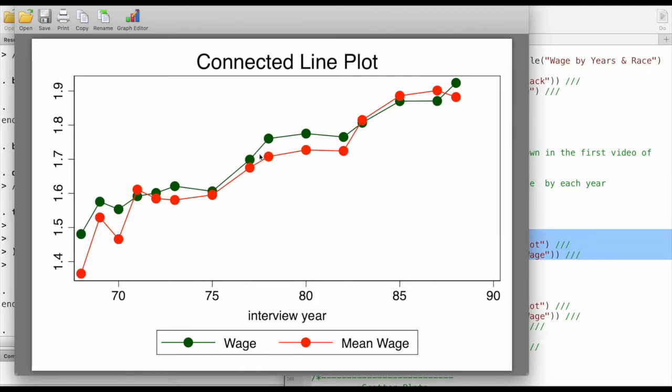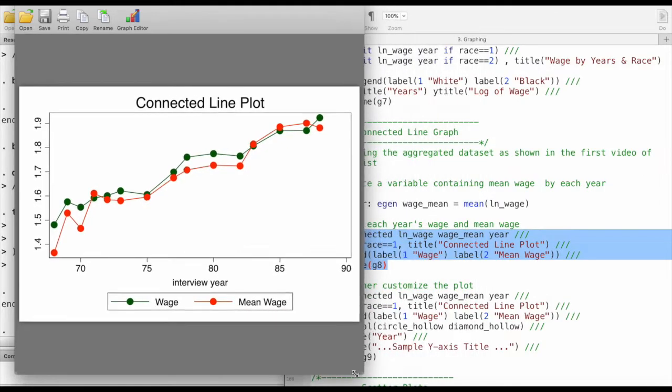This tells us in which years the wage is greater than its mean and in which years or observations the wage is lesser than its mean. Let's take a look at the code to generate this graph.